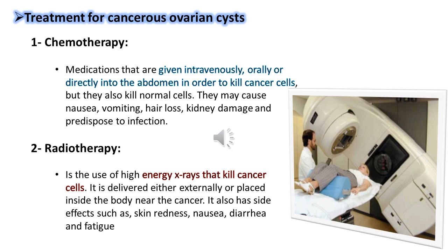Treatment for cancerous ovarian cysts: chemotherapy medications are given intravenously, orally, or directly into the abdomen to kill cancer cells, but they also kill normal cells. Side effects include nausea, vomiting, hair loss, kidney damage, and increased susceptibility to infection. Radiotherapy uses high-energy X-rays to kill cancer cells, delivered either externally or placed inside the body near the cancer. Side effects include skin redness, nausea, diarrhea, and fatigue.